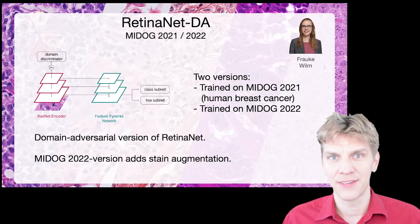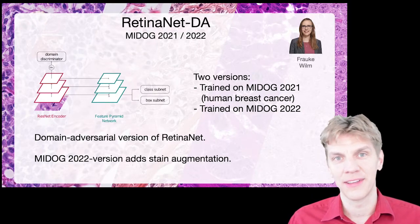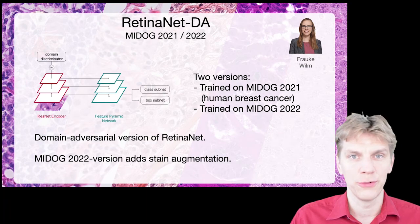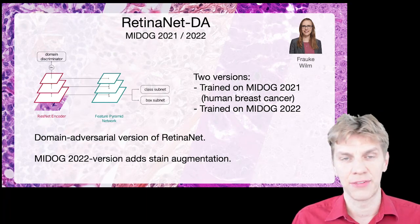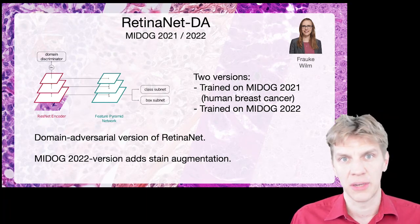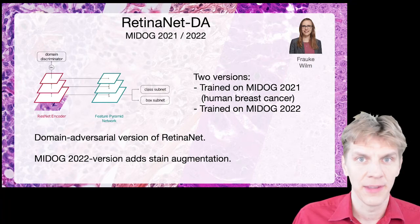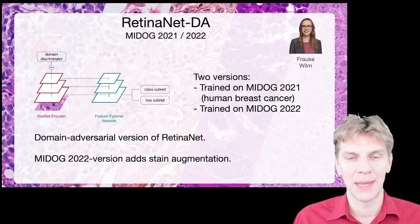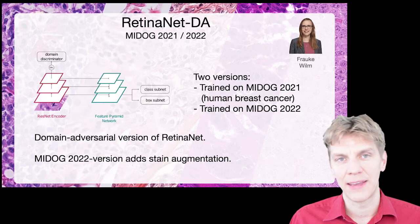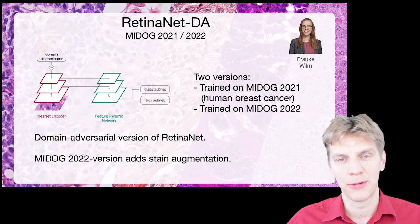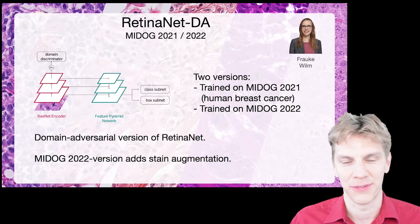Second, we have the RetinaNet which we already introduced last time, which uses a domain adversarial branch. This approach, done by Frauke Willm, has already shown last time that it is quite capable of achieving good domain-generalizing mitotic figure detection performance.